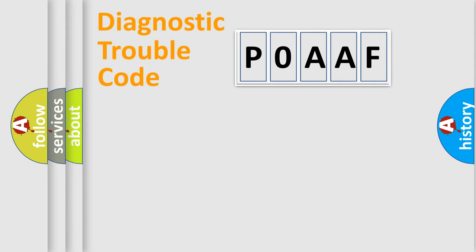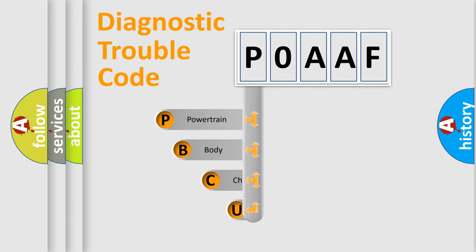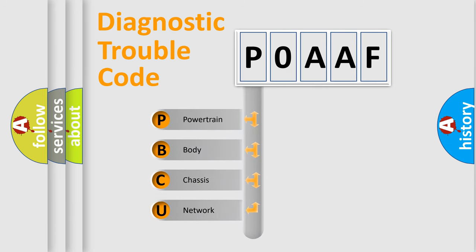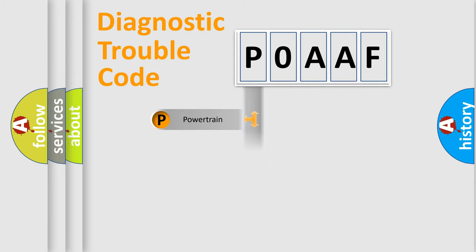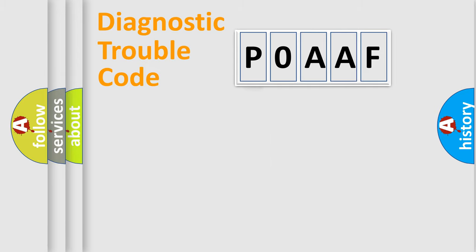First, let's look at the history of diagnostic fault code composition according to the OBD2 protocol, which is unified for all automakers since 2000. We divide the electric system of an automobile into four basic units: Powertrain, Body, Chassis, and Network. This distribution is defined in the first character of the code.